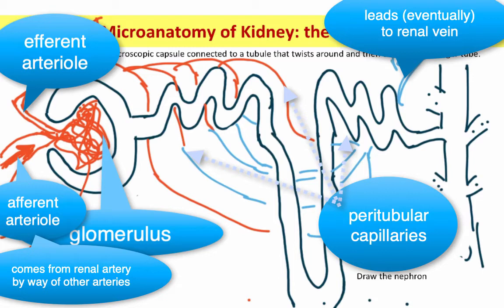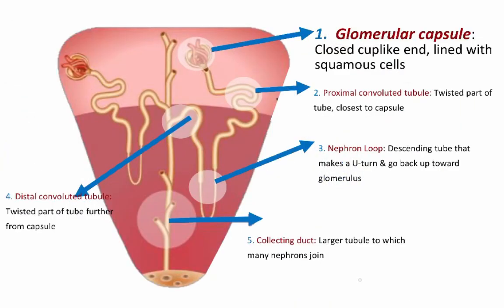So why is knowing this microanatomy so important? The formation of urine is a three-step process and different things happen in different locations. To review: the glomerular capsule is where the nephron begins, leading into the proximal convoluted tubule — proximal because it is directly connected to the glomerular capsule — which leads into the nephron loop, then the distal convoluted tubule, and then into the collecting duct.